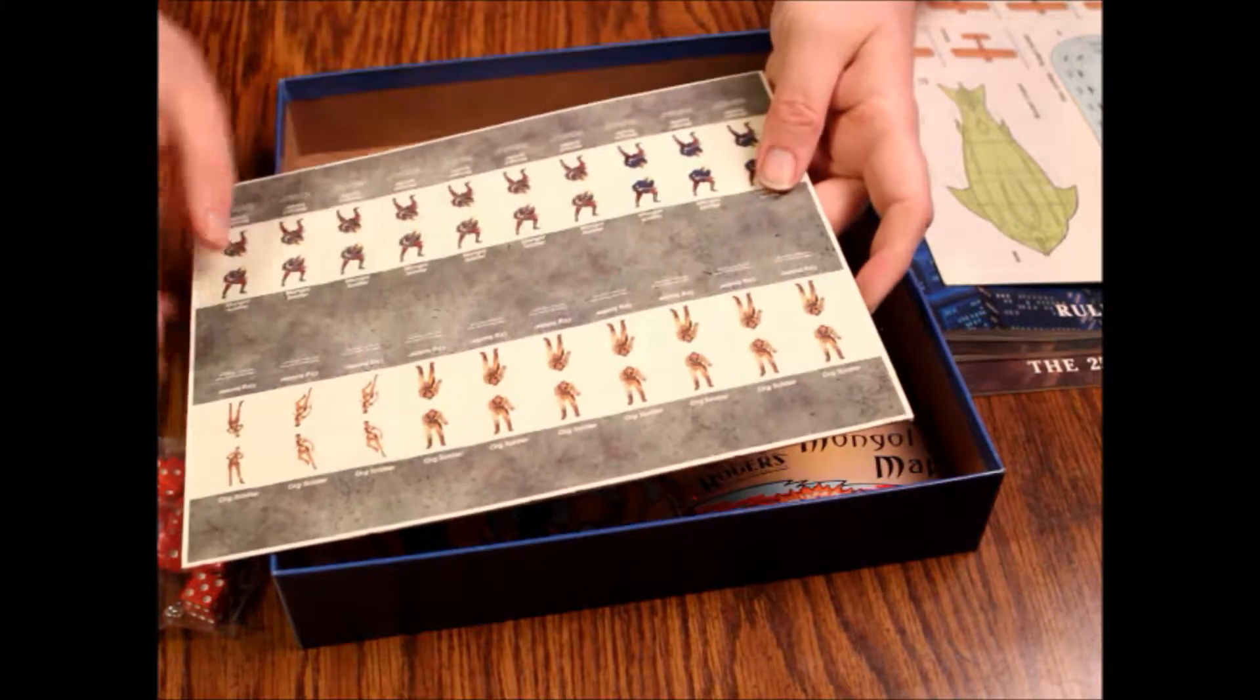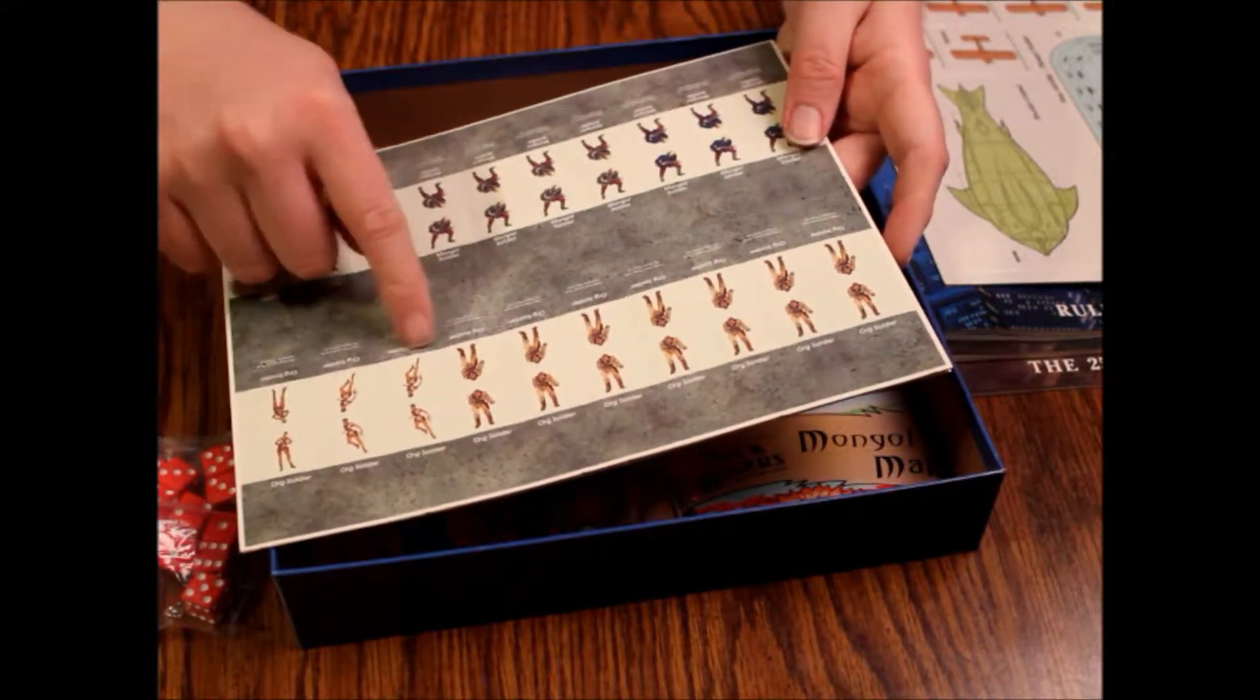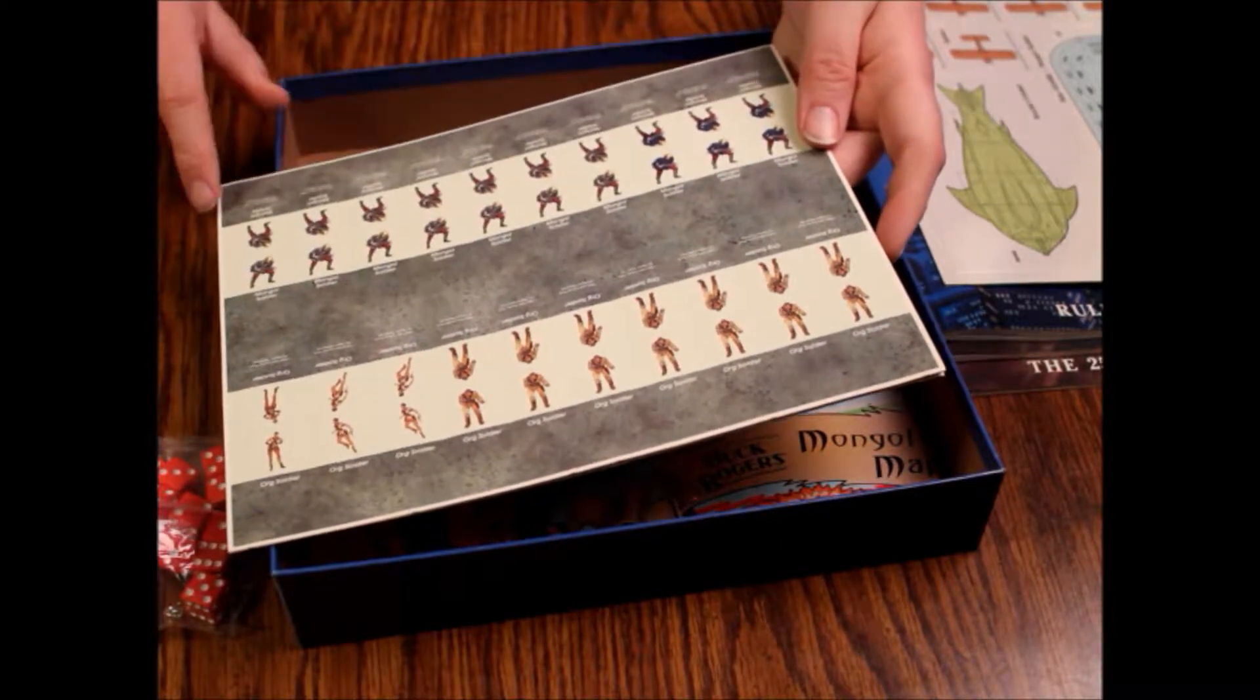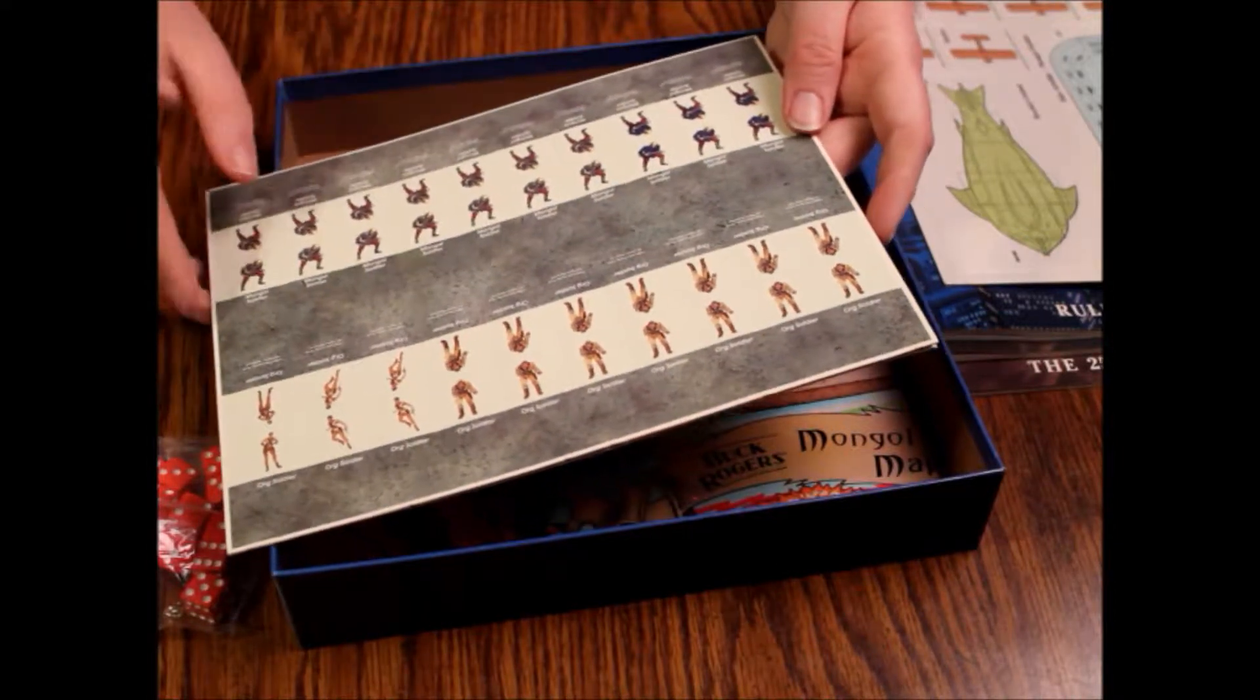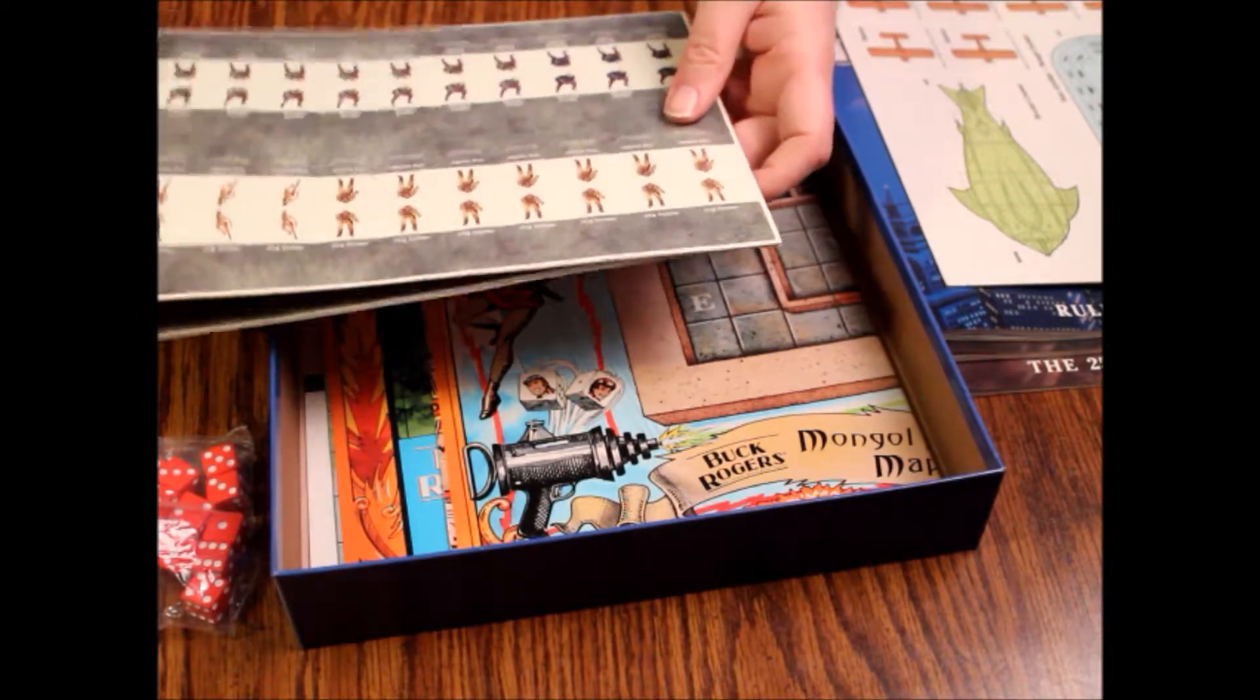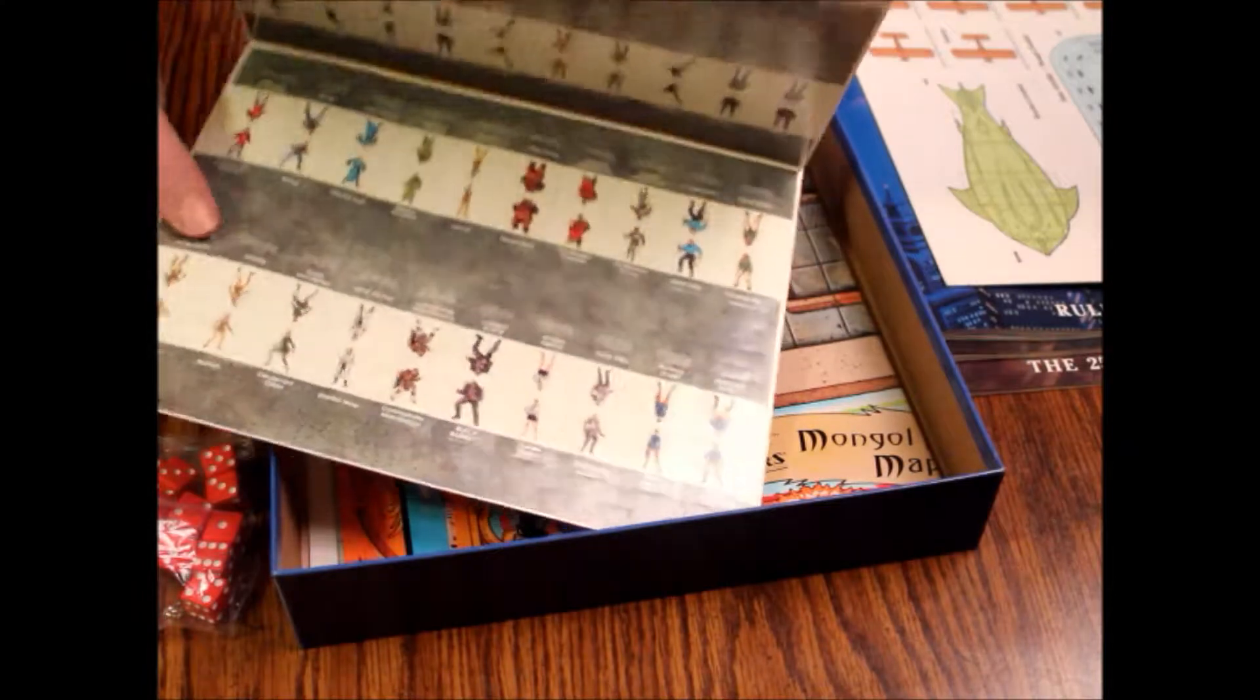Now here we have Mongol soldiers on one side and org soldiers on the other. We have three women and seven men. Mongol soldiers are all male—there's ten of those. These are pretty cheap and they're just fold-ups so they didn't do a lot with miniatures back then.